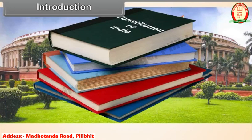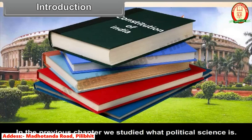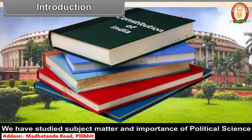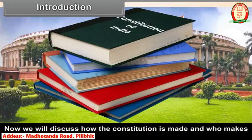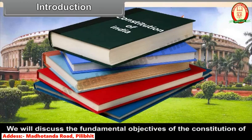Chapter 5: Making of the Constitution. In the previous chapter, we studied what political science is — its subject matter and importance. Now, we will discuss how the Constitution is made and who makes it, and we will discuss the fundamental objectives of the Constitution of India.